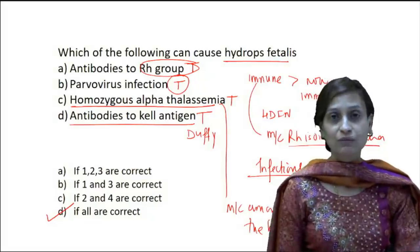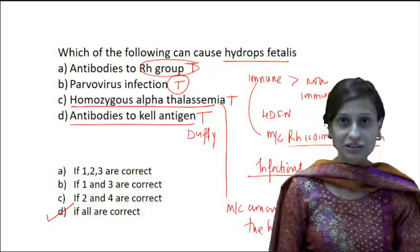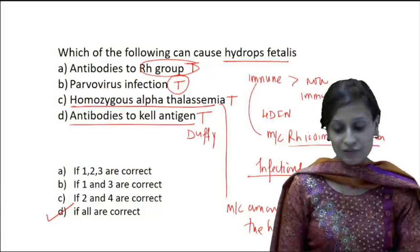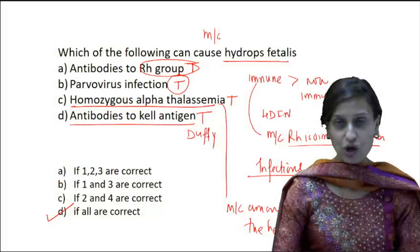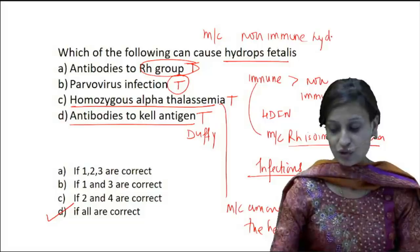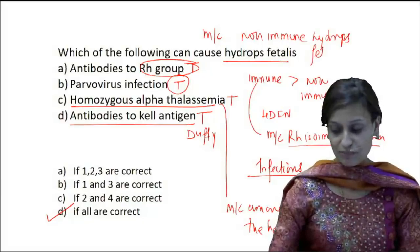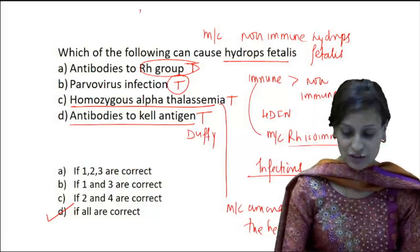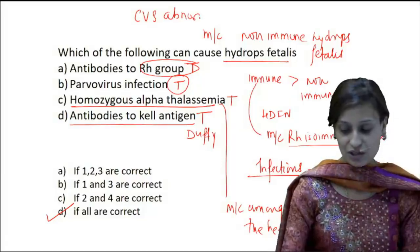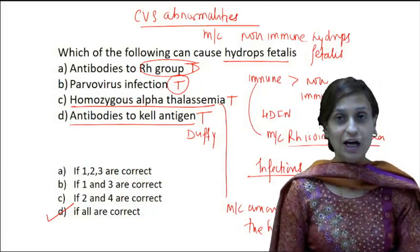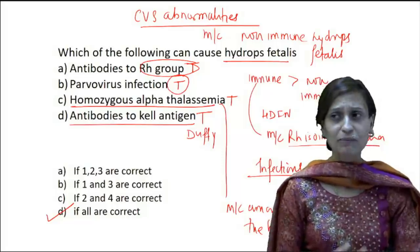Two more very high-yielding points: the most common cause of immune-mediated hydrops fetalis is RH isoimmunization. For non-immune mediated hydrops fetalis, the most common cause worldwide is cardiovascular abnormalities.